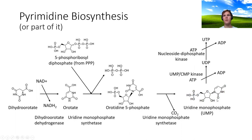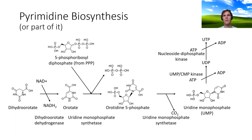I'll briefly go over pyrimidine biosynthesis, as this is one of the pathways we'll look into in this assignment. We're going to start at dihydroorotate, which is then converted into orotate via the dihydroorotate dehydrogenase complex. Orotate is then converted to orotidine 5-phosphate by uridine monophosphate synthetase, using 5-prime phosphoribosyl diphosphate and converting it into pyrophosphate. That 5-phosphoribosyl diphosphate comes from the pentose phosphate pathway.